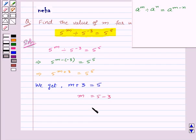So, we get m plus 3 is equal to 5 or m is equal to 5 minus 3. That is equal to 2. So, that means m equal to 2 is our required answer for this question.